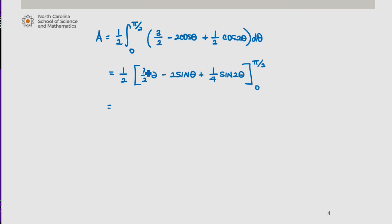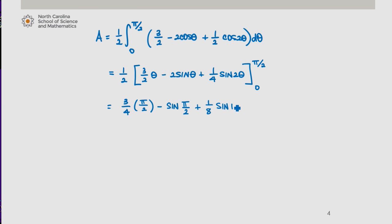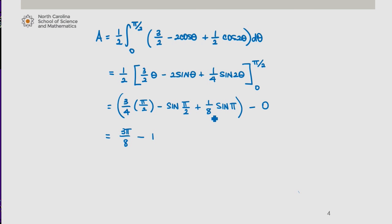Distributing the one half, I get three fourths times pi over 2 minus sine of pi over 2 plus one eighth sine of 2 times pi over 2, which is sine of pi. Substituting 0 gives 0 for the entire expression, so minus 0. Ultimately I get three pi over 8 minus 1, since one eighth sine of pi is 0. So that's the area of the cardioid in just the first quadrant.